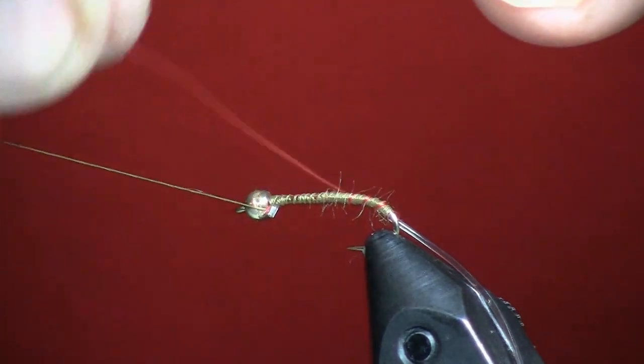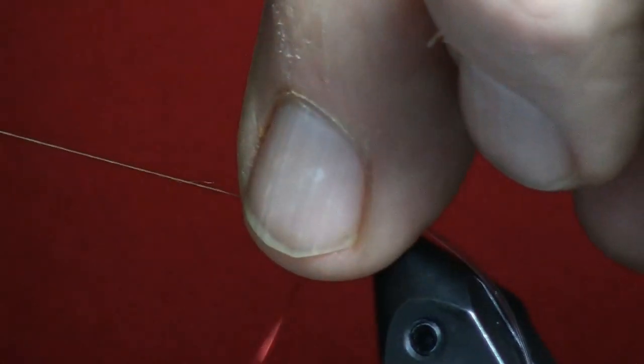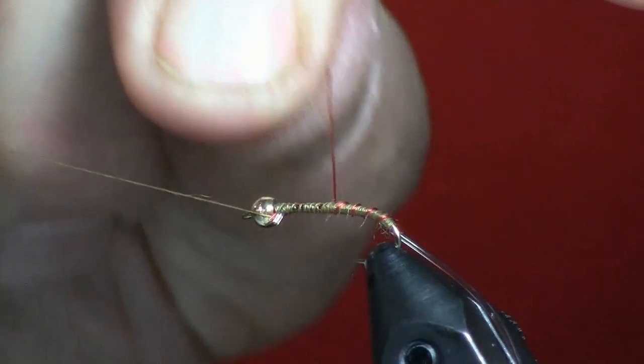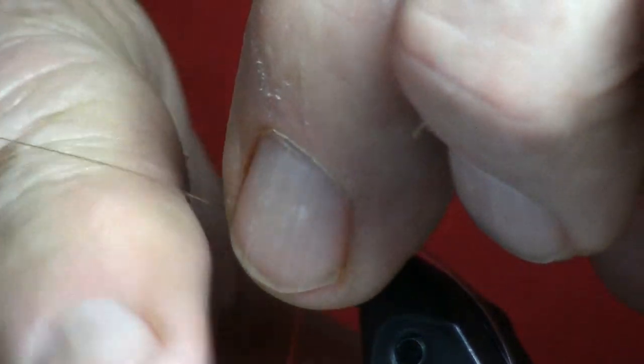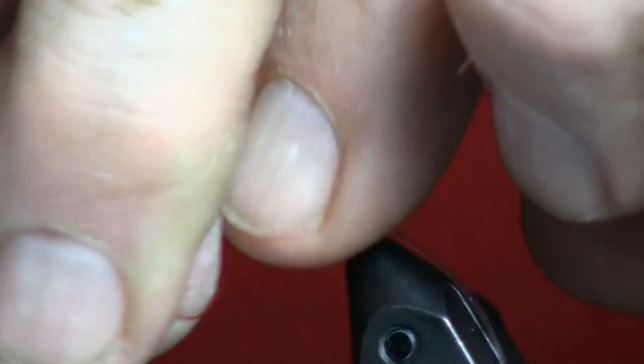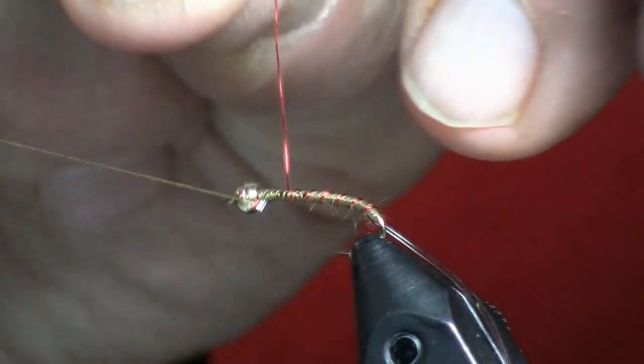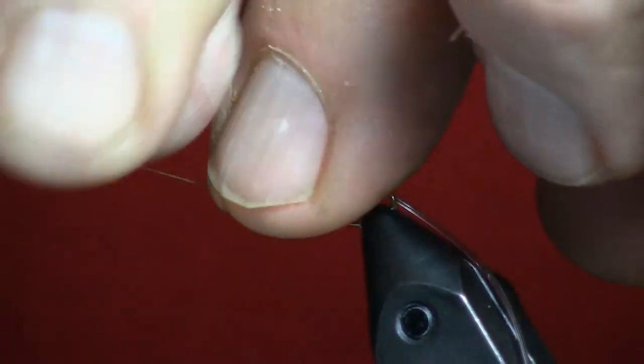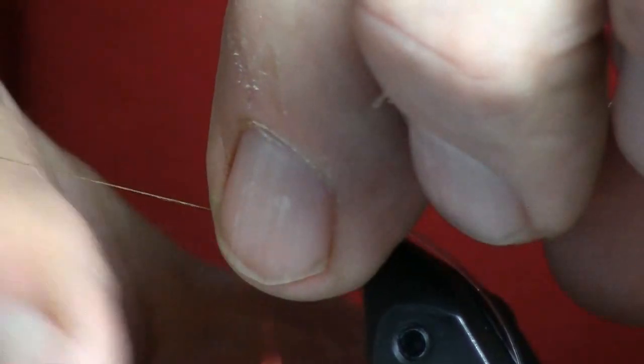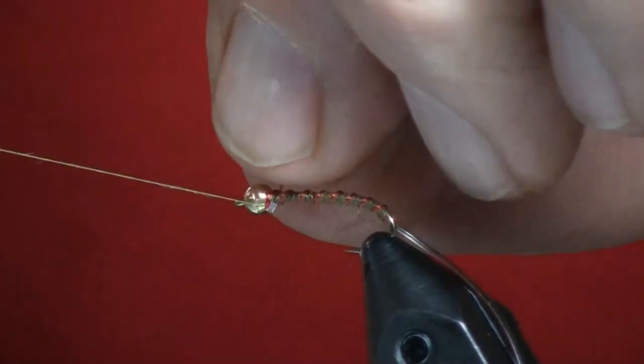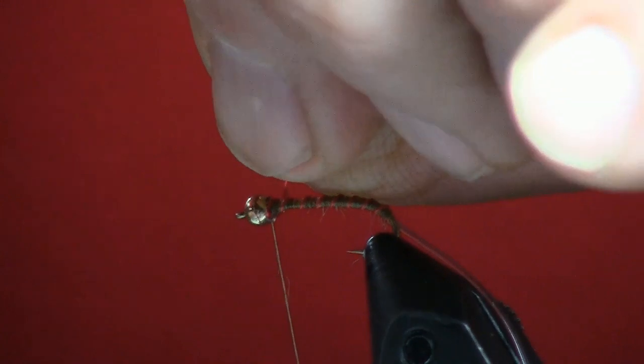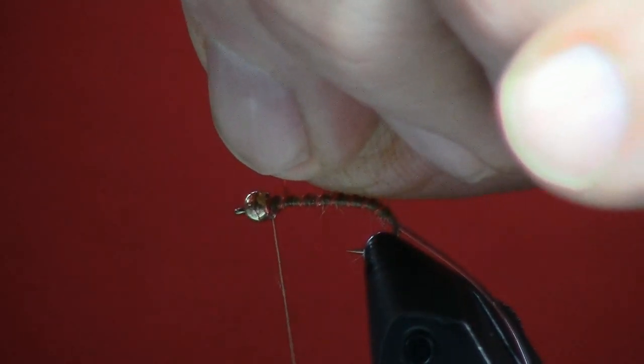Then I'm going to come back with the stretch magic and what that's going to do is give us some of that translucence that you oftentimes see when a midge pupa starts making its way toward the surface and it fills that husk with gas to help float it up there to the surface.